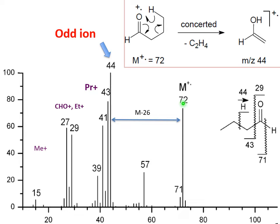So we have m/z 72 going to m/z 44. What is interesting is that this mass is an even number. You have seen that all masses of the cations we had before were odd numbers. Now we have an unusual ion with m/z 44 — and the difference is of course also an even number. It can be drawn to show that this is not only cleavage but also addition of hydrogen, giving a mass of 44.